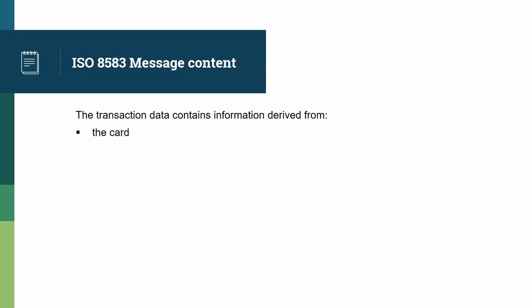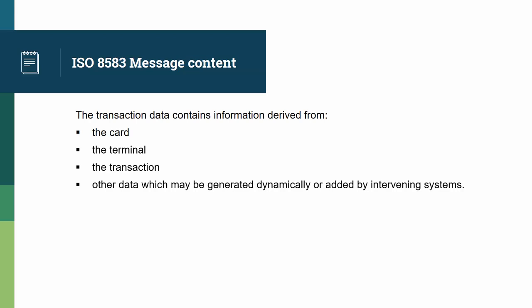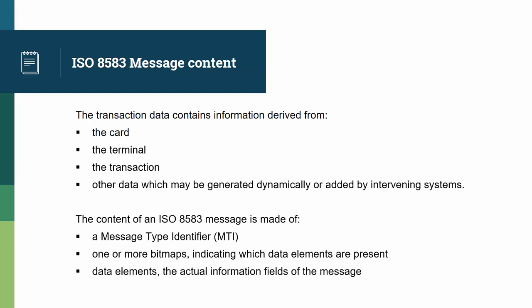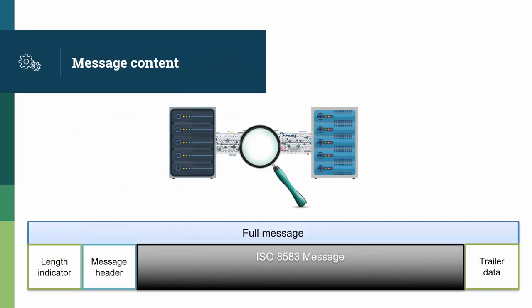Let's zoom in on the ISO 8583 message content. The transaction data contains information derived from the card, like the account number and the card expiry date; from the terminal, like the merchant number; from the transaction, like the amount or the transaction date; and from other data which may be generated dynamically, like an EMV card cryptogram or added by intervening systems. The content of an ISO 8583 message is made of a message type identifier, or MTI; one or more bitmaps indicating which data elements are present; and data elements — the actual information fields of the message. So, inside the ISO 8583 message are, in that order: the message type identifier, one or more bitmaps, and data elements.